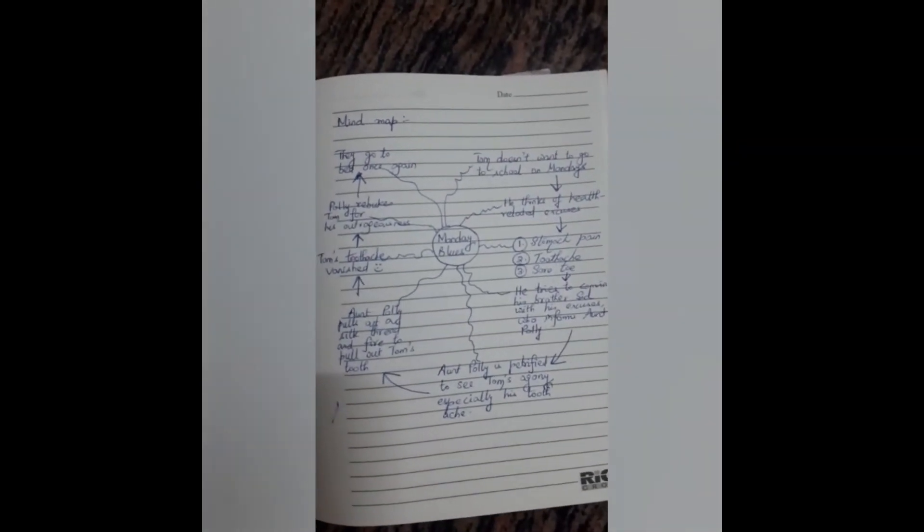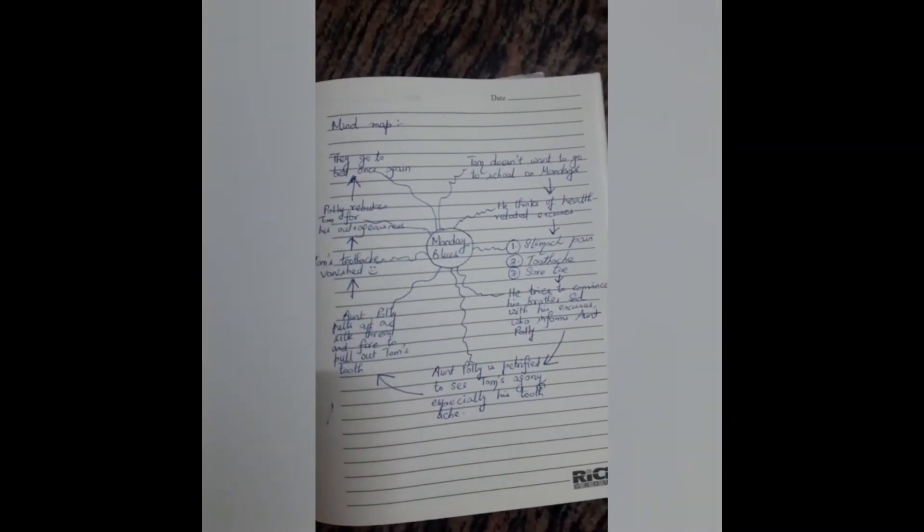Aunt Polly says she is going to evaluate the situation until next morning and then decide whether Tom would go to school or not. This is the mind map of this chapter. I hope you understood this chapter well.